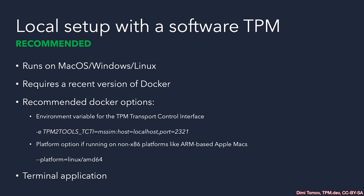There are several recommended options to make your experience better. Most importantly, the TPM2 tools need to know how to talk with the TPM simulator, and for that there is an environment variable option. You can set this once inside the Docker container with your interactive shell, or set it as an argument on the Docker command line — I prefer this way because once set, it applies for the complete execution of the container. The other important option is to specify that the container is for a Linux x86 64-bit system.